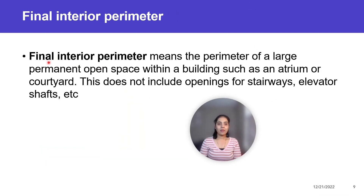Final interior perimeter means the perimeter of a large permanent open space within a building, such as an atrium or courtyard. This does not include openings for stairways, elevator shafts, etc.